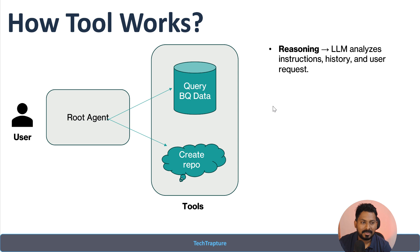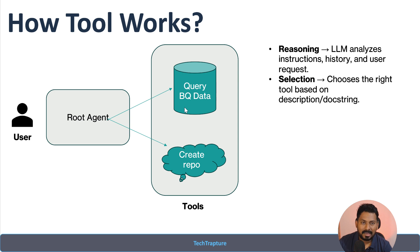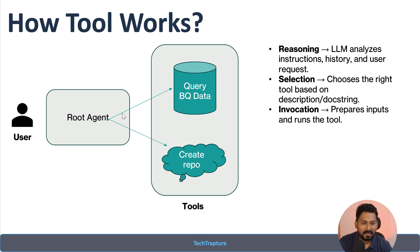First is reasoning. All LLM models come with reasoning capability — in our case mostly Gemini. If a user asks 'give me the top 10 records from my BigQuery table,' the LLM uses its reasoning capability to identify that the user's query is related to BigQuery and selects the BigQuery tool. It chooses the right tool based on the tool's description or doc string. The description of your agent or sub-agent determines where to route the request.